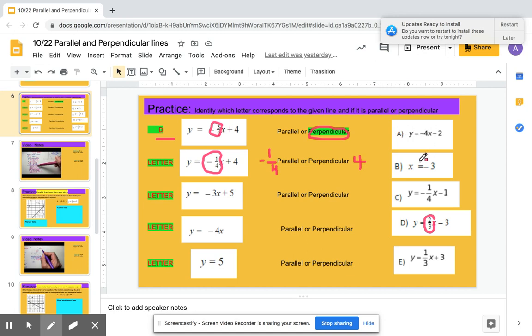Letter B, the slope is undefined. Letter C, I see negative 1 fourth as the slope. So if I see negative 1 fourth as the slope, that is the exact same slope as the line given to me. So I want to recognize that this is parallel. And so letter C would go here.